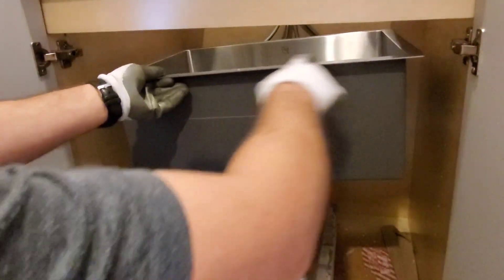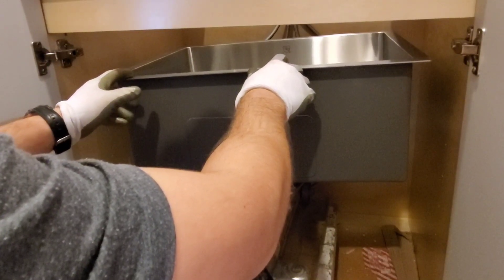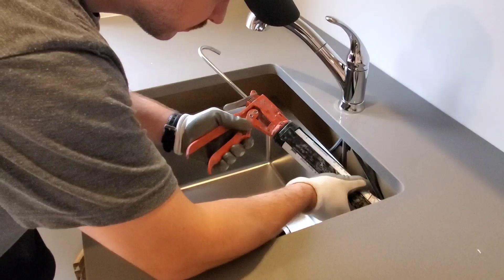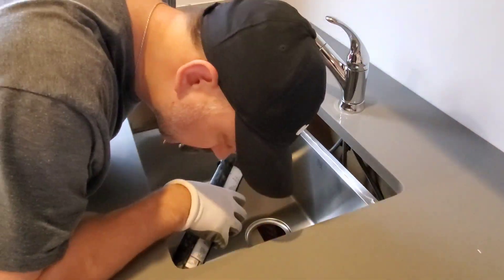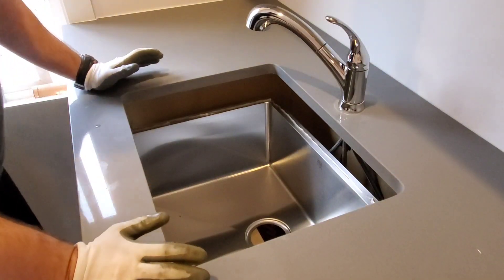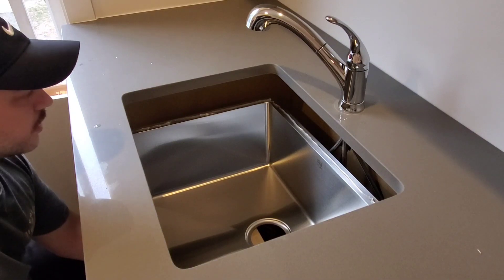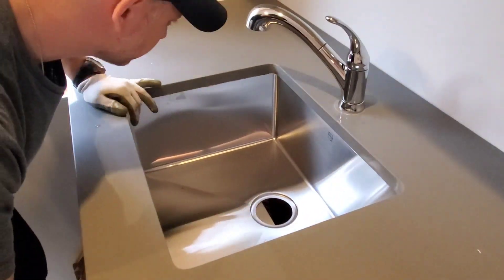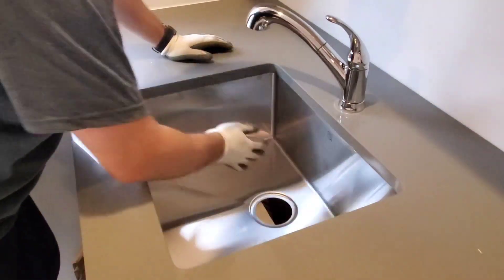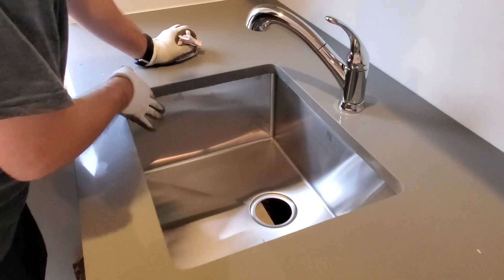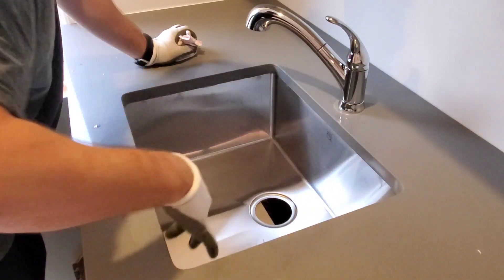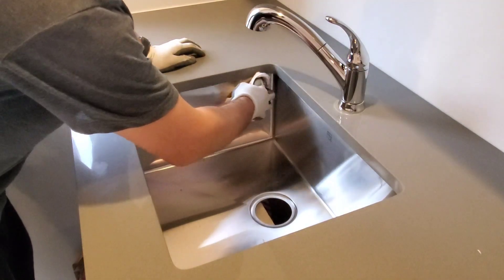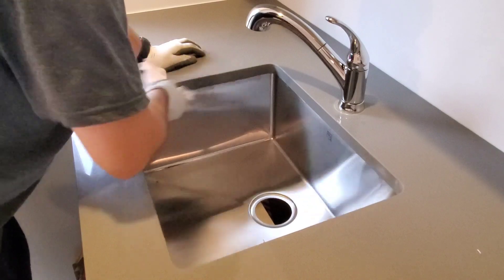What needs to happen now is I need to put a bead of silicone all the way around the sink and then I'm going to use the jack here to lift the sink into position. I've put the bead of silicone all the way around. I'm going to raise up the sink using the jack. Feel on the edges to make sure that the sink is lined up so it's the same all the way around. Once that's done, wipe off the silicone all the way around.